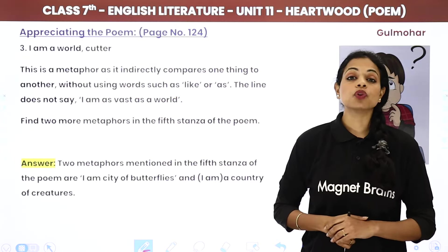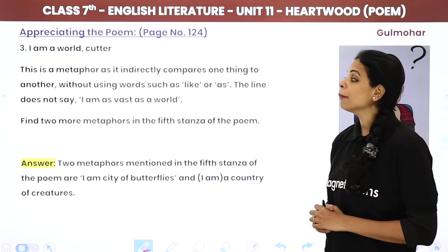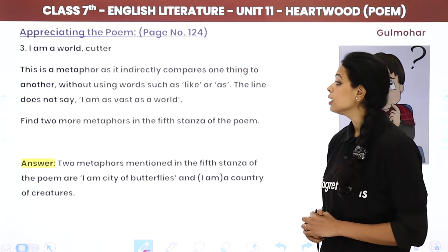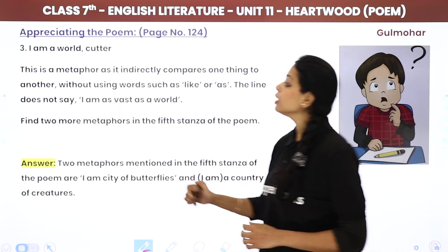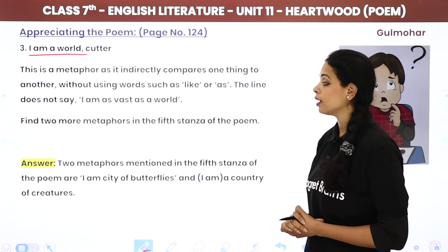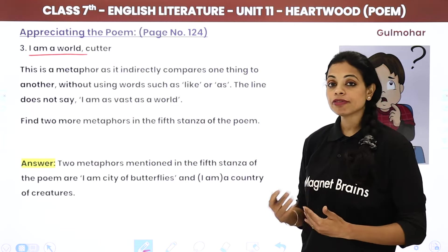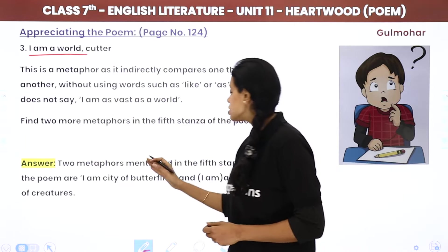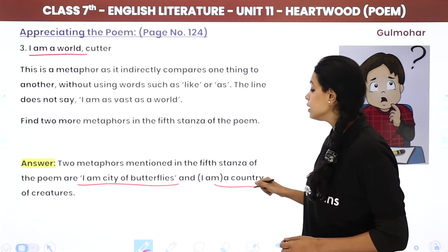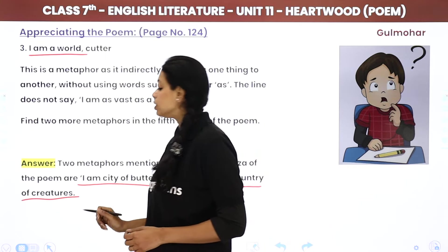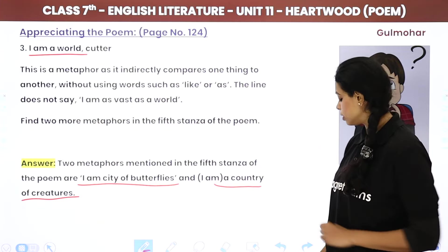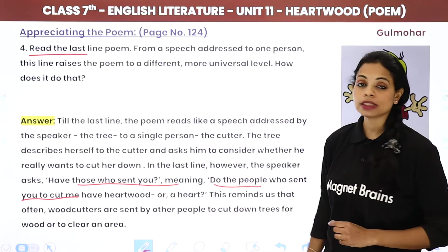'I am a world, cutter' — this is a metaphor, as it directly compares one thing to another. Two metaphors mentioned in the fifth stanza of the poem are: 'I am a city of butterflies' and 'a country of creatures.'